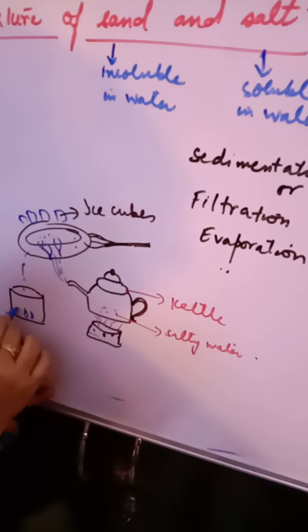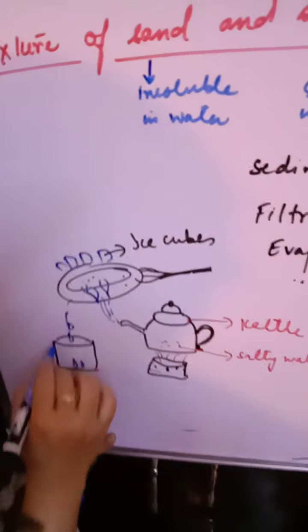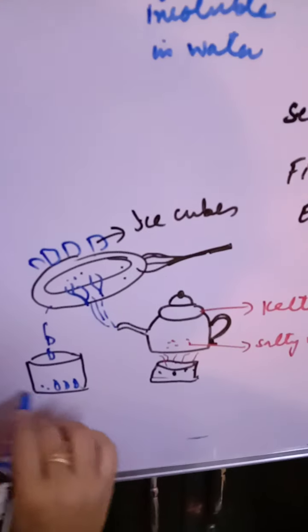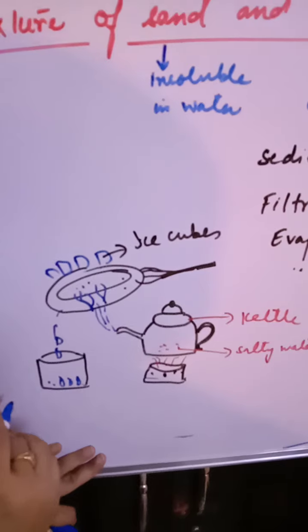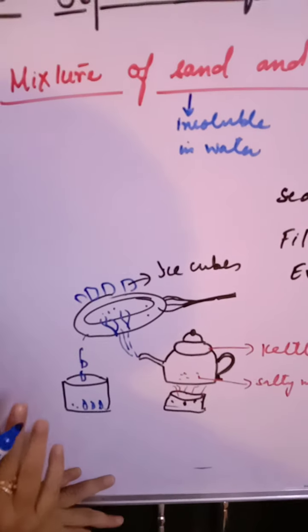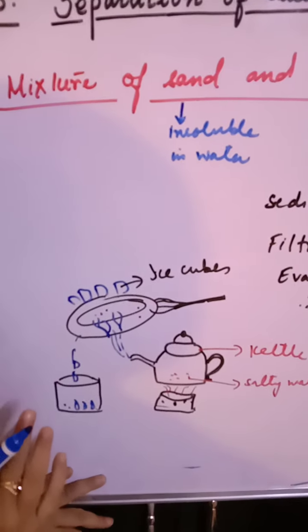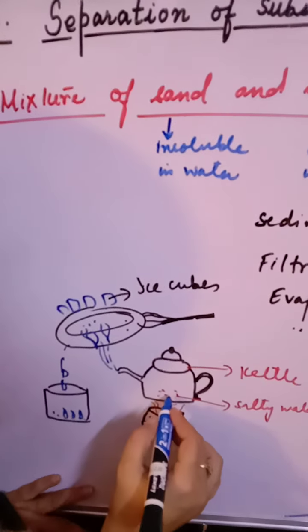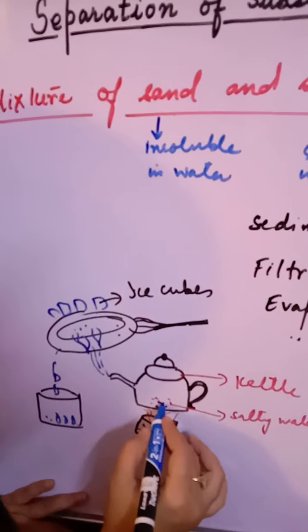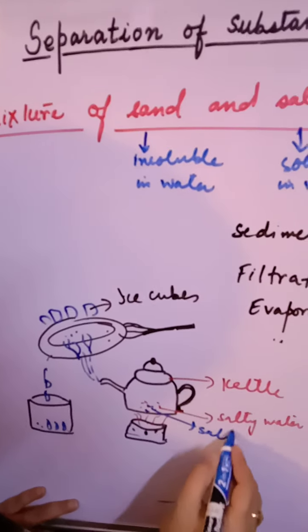It will be collected in the form of drops and you will have water. You will get back the amount of water you took. When you find that no vapors are coming out from the kettle, what you will be left with is salt. You will have salt in the end.